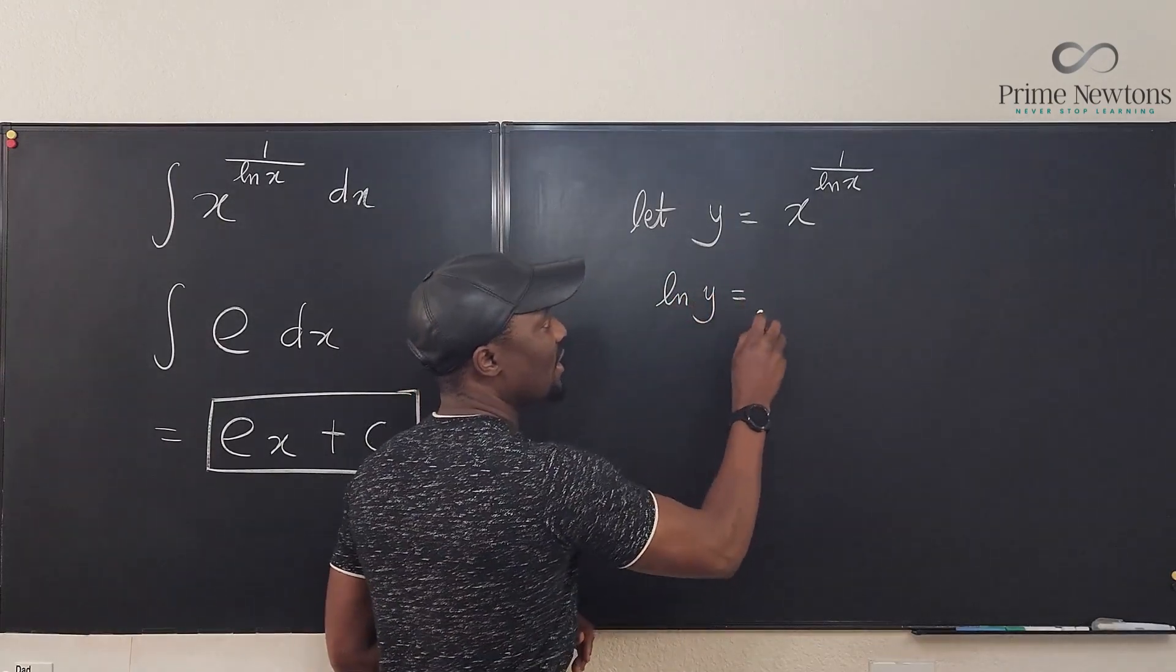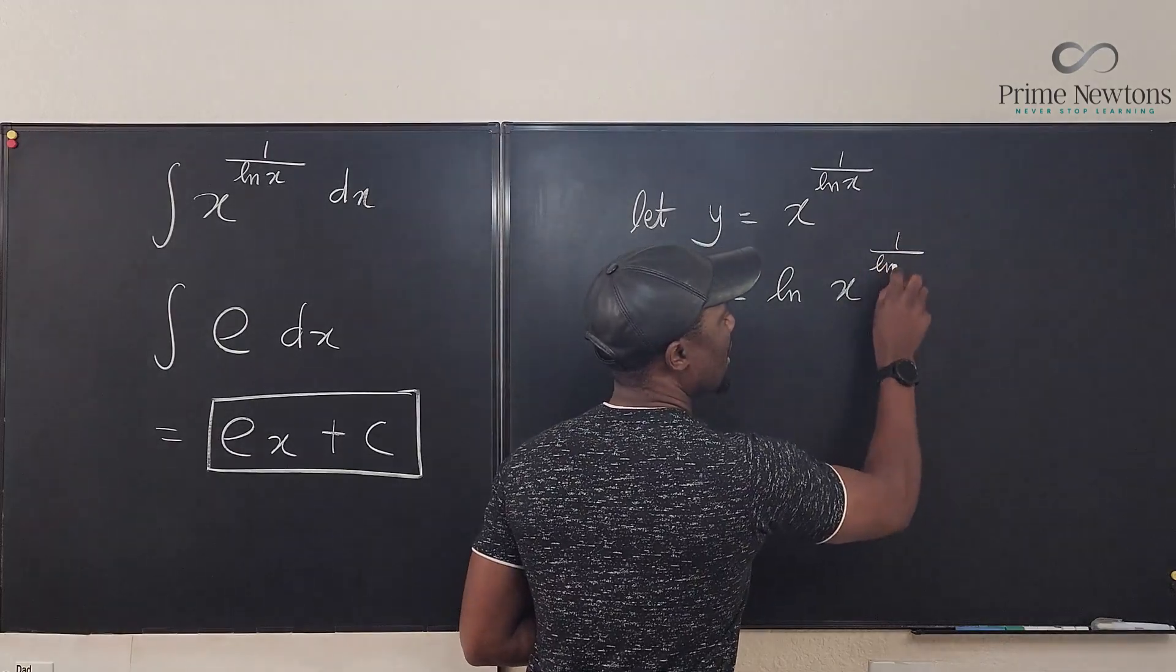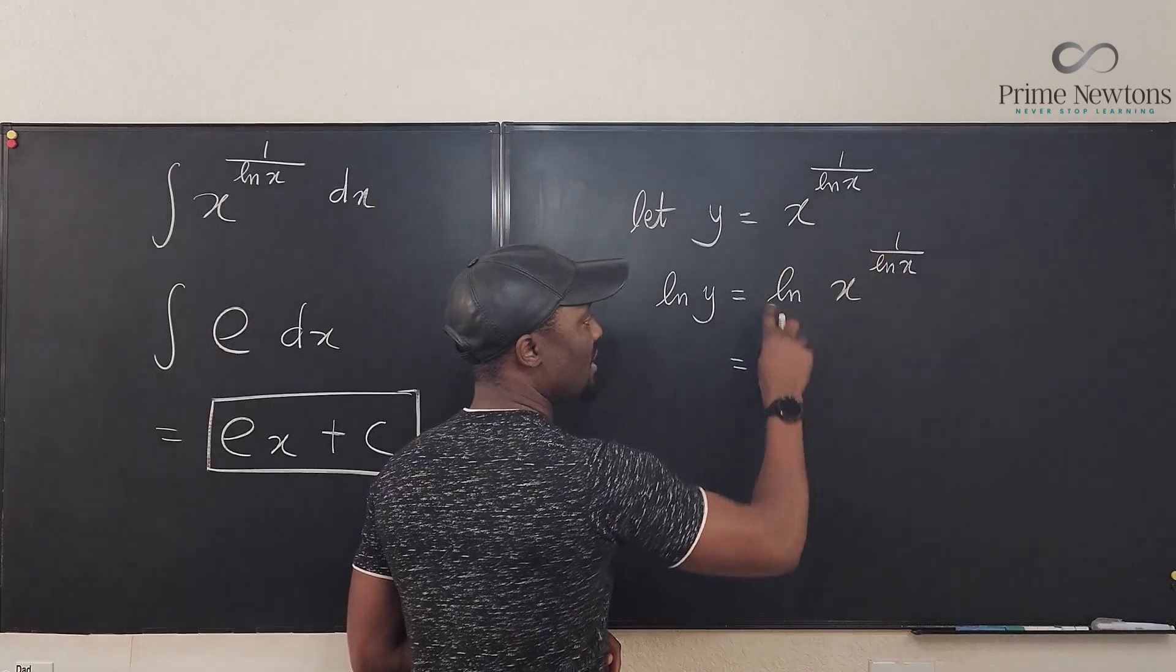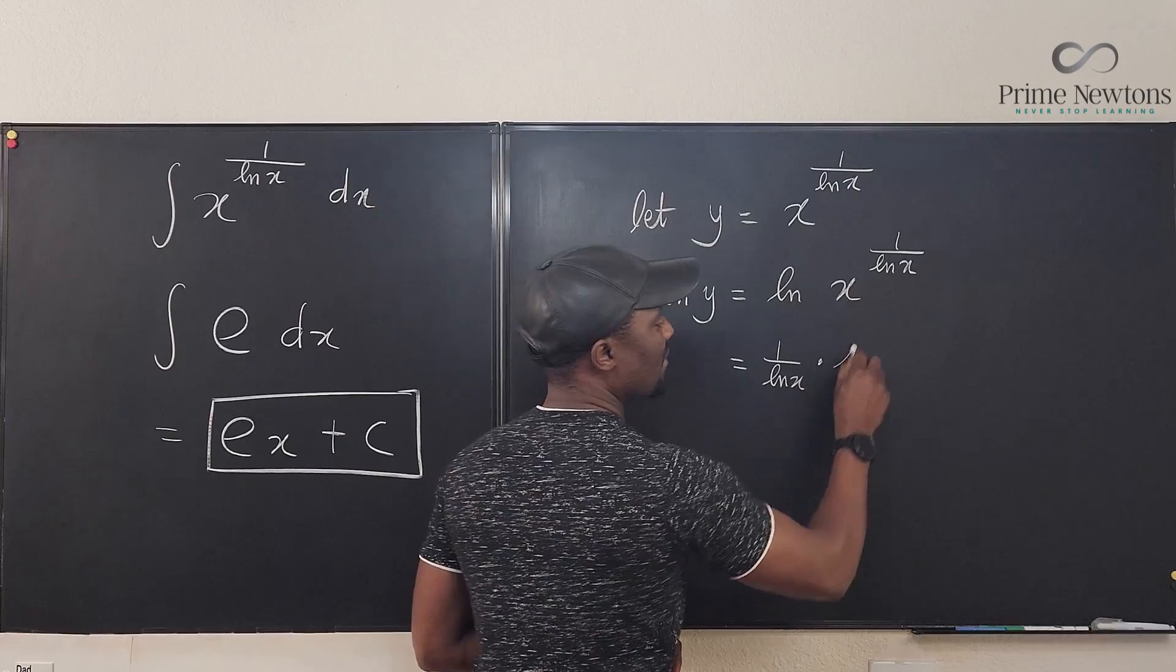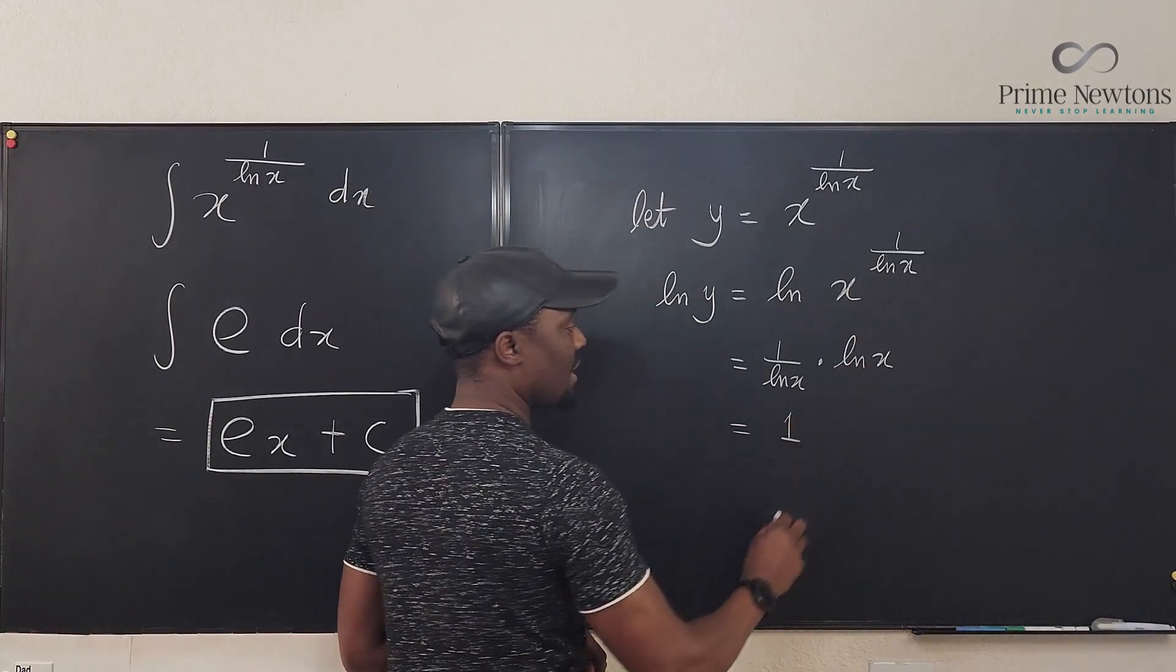The natural log of y will be the natural log of x to the 1 over ln of x, which is, if I bring this down here, 1 over ln of x times ln of x. Do you see that? That gives me 1.